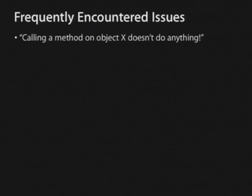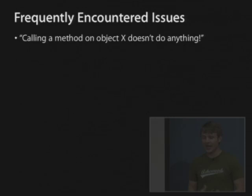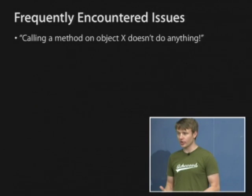Before we get into the meat of the lecture today, we had a couple of frequently encountered issues. One question we've been getting a lot is: I've got this object, I'm calling a method on it — like set text or set background color — and it doesn't have any effect. The first thing you're going to want to check is whether the object is nil, because in Objective-C, messaging nil is allowed and it'll just silently fail.